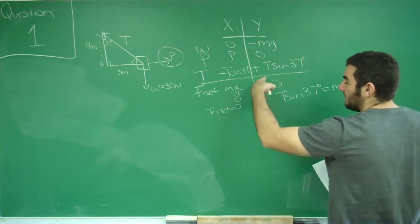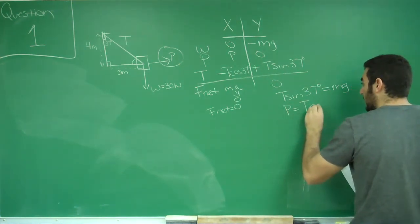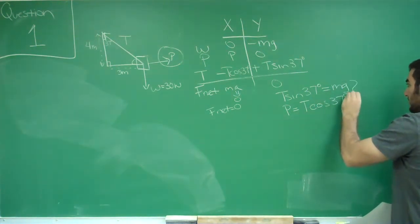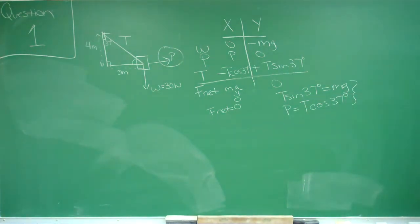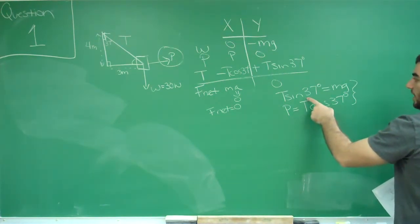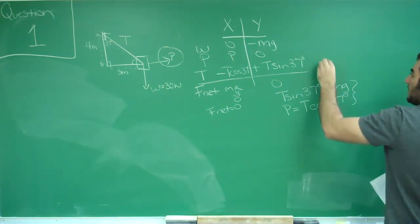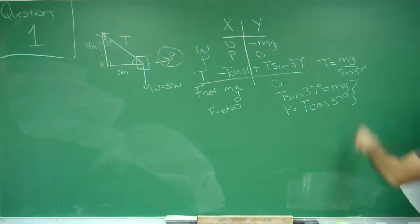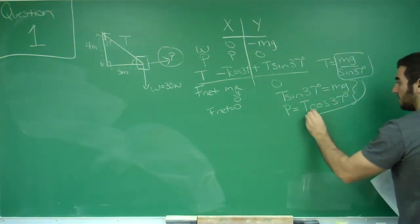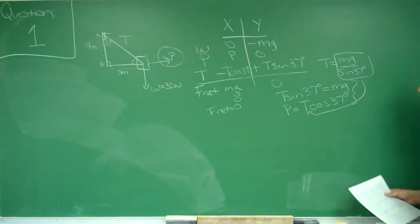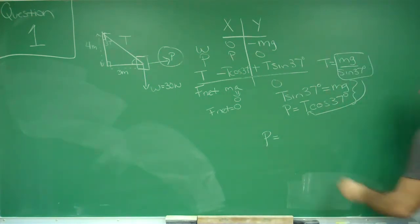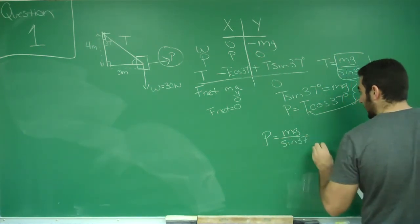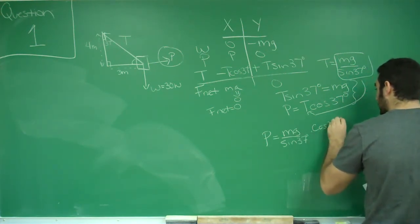Rearranging and adding T to the other side, the pulling force equals T times cosine of 37 degrees. We can solve this as a system of equations, with both having T in common. Since we're looking for the pulling force, let's divide the top equation by sine 37 to solve for T. So T equals mg divided by sine of 37 degrees. We can plug this back in for T.